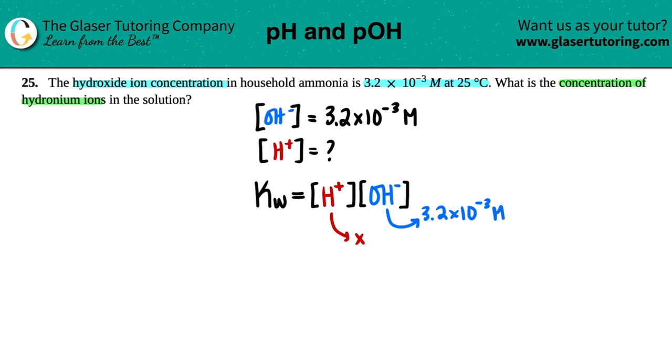We're searching for the H+, so I'll label that as X, but the thing is, is that they didn't give us a KW value. KW stands for the ionization of W is water. So that's where the W comes from. W is water.